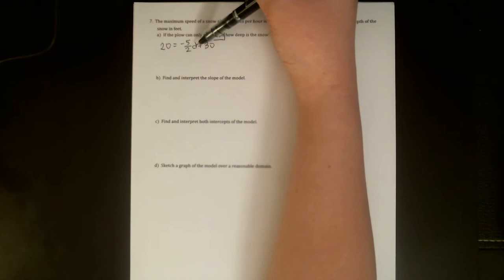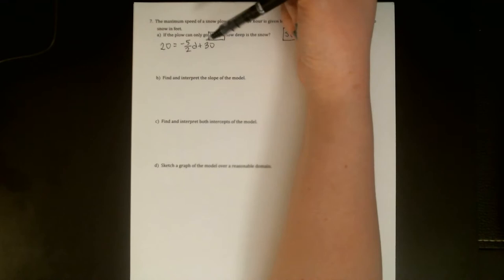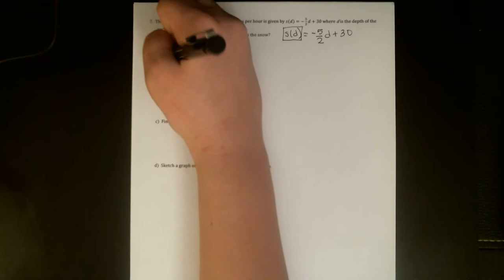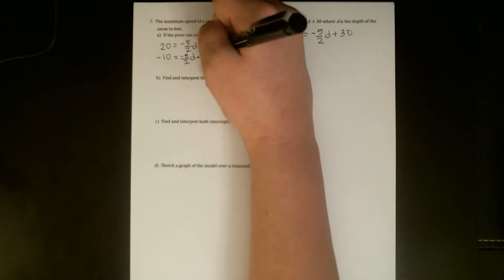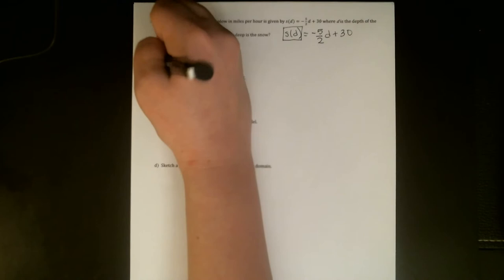The value we're given is this 20 miles per hour. This is a value of our output variable, the speed of the plow. To be really clear, when I replace my output variable with 20, it's this entire thing. The S and the D are not multiplied. They're attached. This entire chunk represents output. So we're going to have 20 equals negative 5 halves D plus 30. And we need to solve for D.